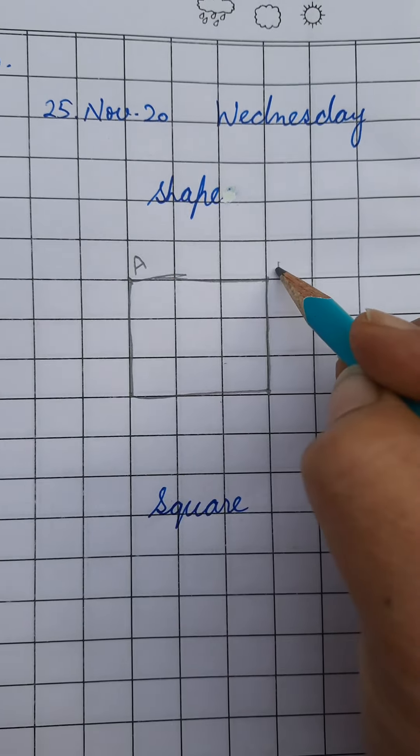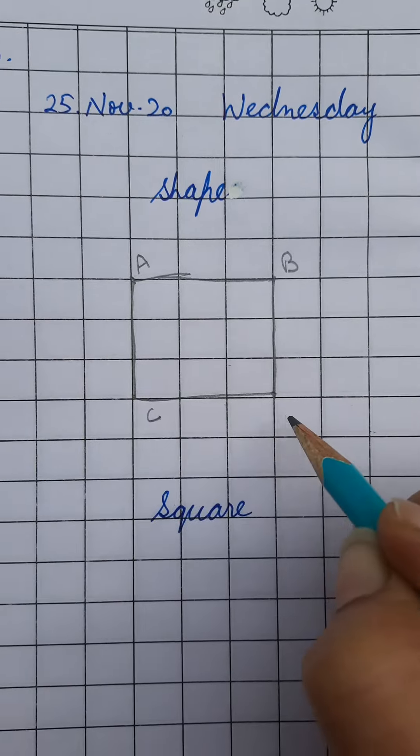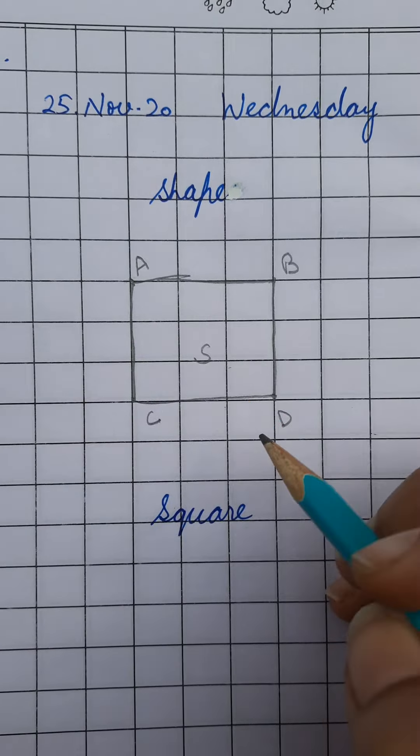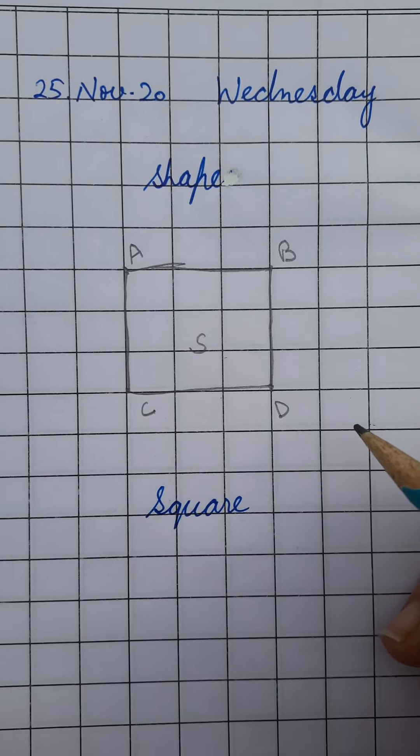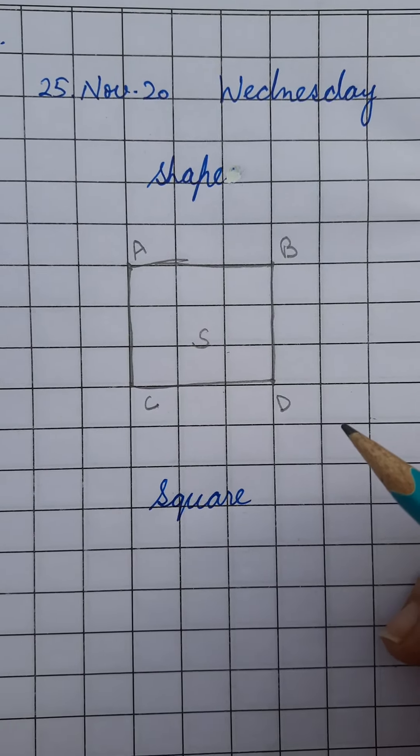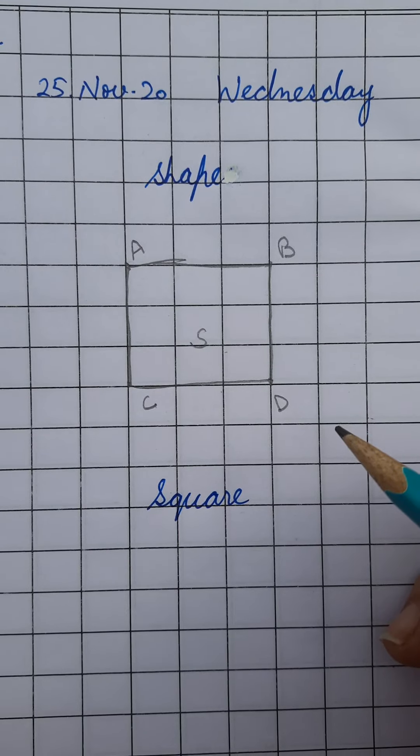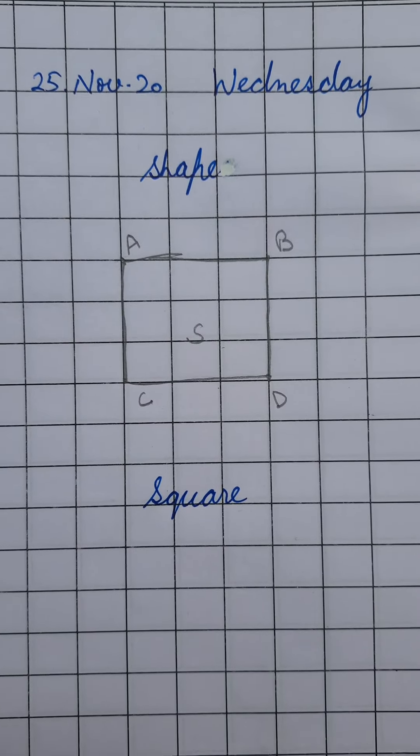Write here A, B, C, and D. S in the centre. Which shape is this? This is a square shape. Do practice of this shape at home. Thank you. Have a nice day.